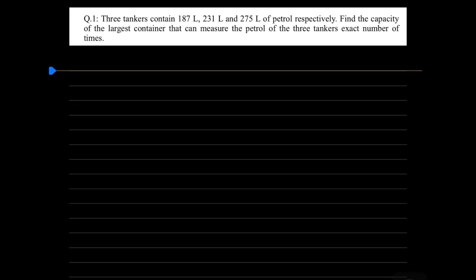So how do you write this statement? First of all, you don't have to explain what you are calculating HCF. You can write it directly. HCF of 187, 231, and 275 will give us the capacity of the container.